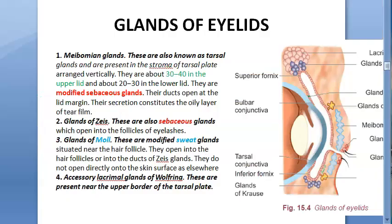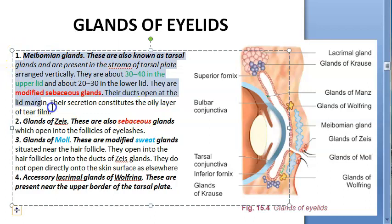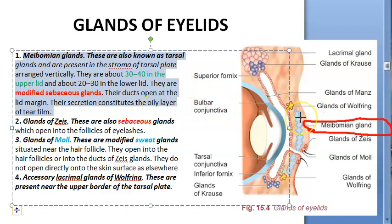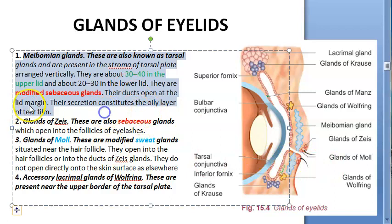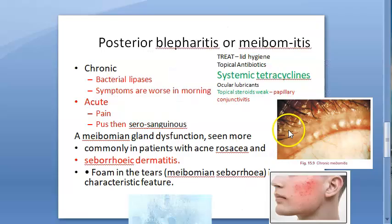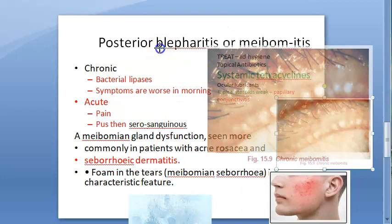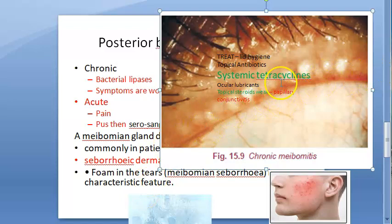There are many glands of the eyelids. Meibomian glands are modified sebaceous glands, more numerous in the upper eyelid — 30 to 40. The ducts of these glands open at the lid margin. When all the exits of these ducts are clogged, it becomes meibomitis, as seen in this image where all the meibomian gland duct exits are blocked.